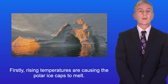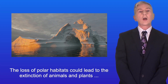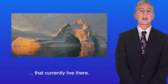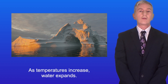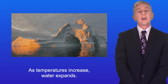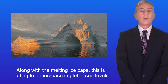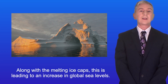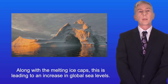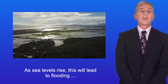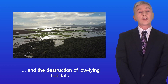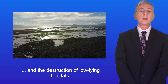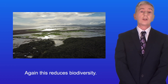Firstly, rising temperatures are causing the polar ice caps to melt. The loss of polar habitats could lead to the extinction of animals and plants that currently live there. As temperatures increase, water expands, so along with the melting ice caps, this is leading to an increase in global sea levels. As sea levels rise, this will lead to flooding and the destruction of low-lying habitats, and again this reduces biodiversity.